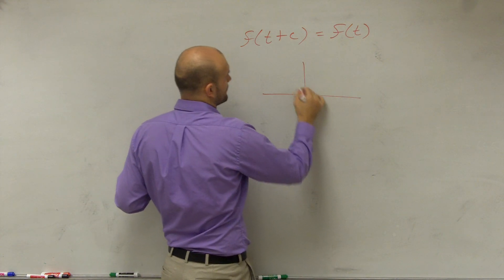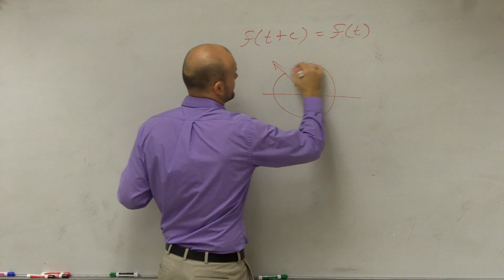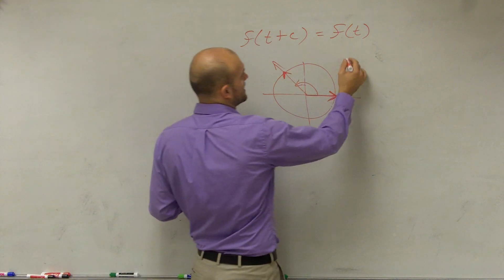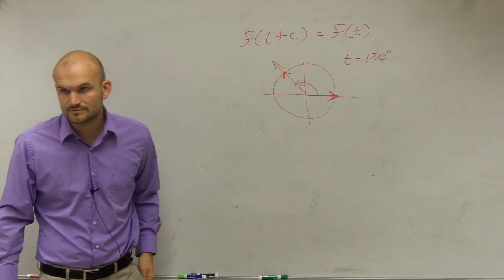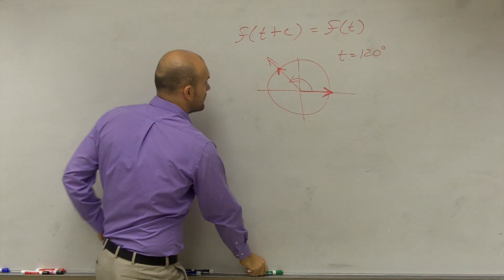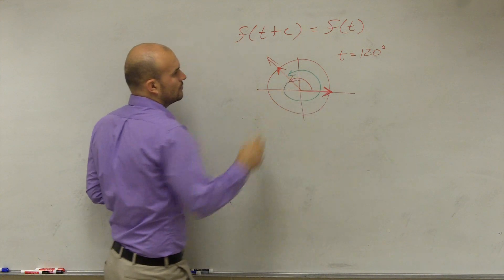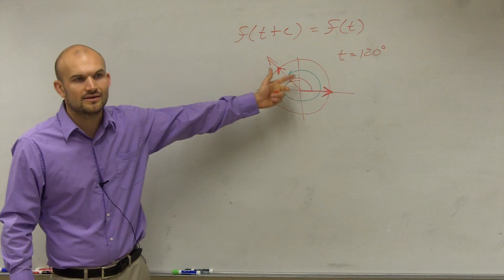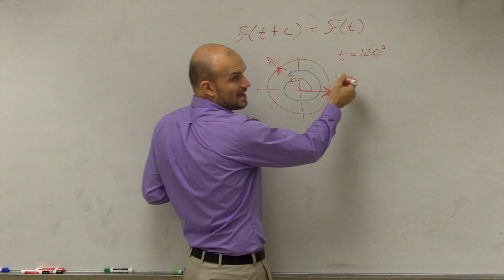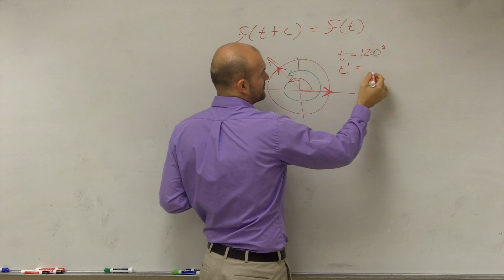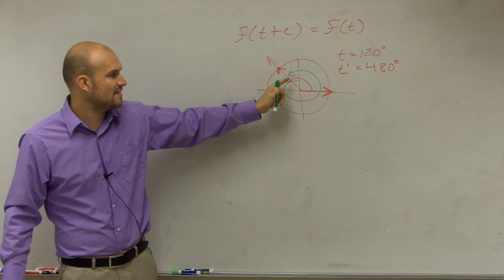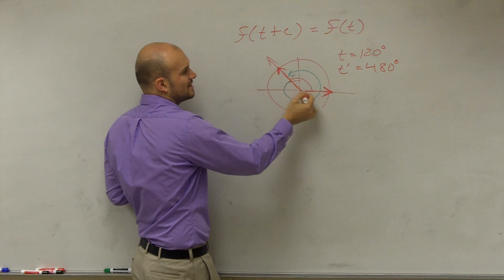How about we talk about a coterminal angle? Let's start with t equals 120 degrees. If I was going to find its coterminal angle, I'd have to add how much? Well, all the way around, I'd add my 360 degrees. So my coterminal angle, which I can call t prime, would be 120 plus 360, which is 480 degrees. They're not equivalent angles, but they are coterminal, meaning they have the same initial and terminal side.